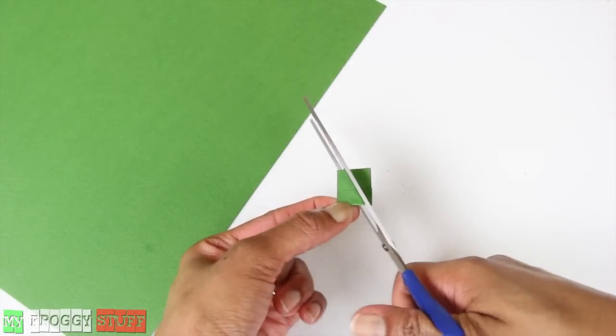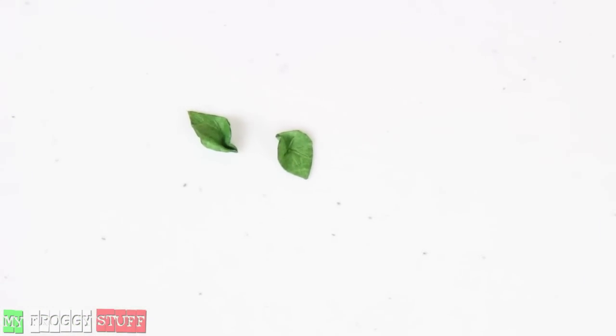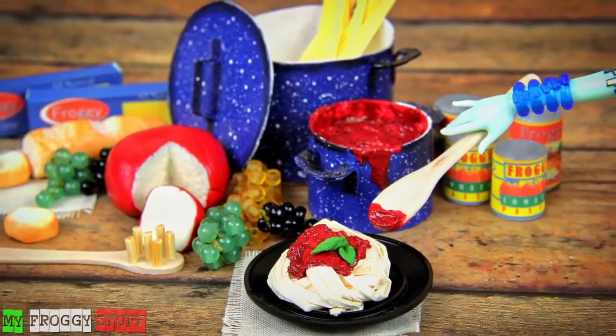Cut cardstock, then wrinkle them to make basil. And you're done. Happy crafting!